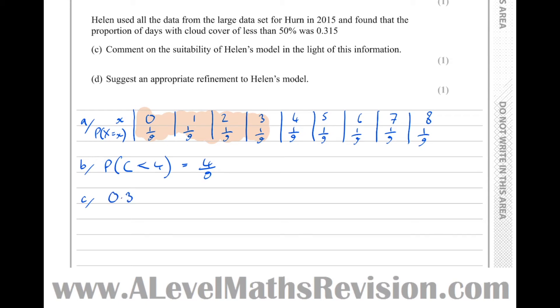So 0.315 is significantly different to 0.4 recurring. Therefore, model does not look to be reliable.